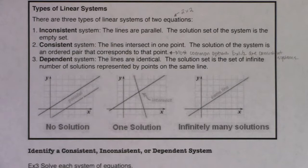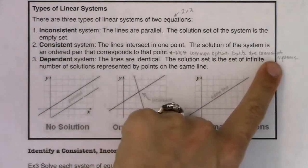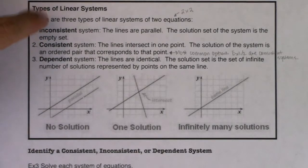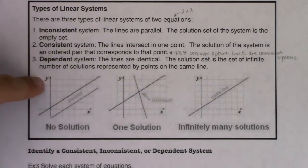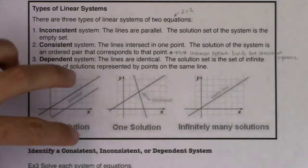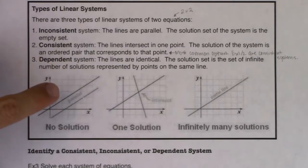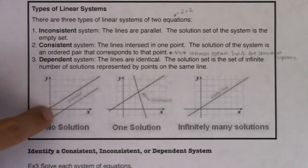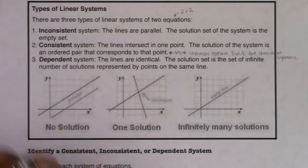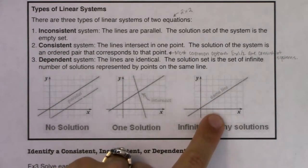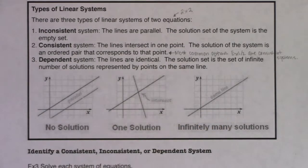In example one and two we saw consistent systems. So in example three, I'm going to give you a version of an inconsistent and a dependent system. I want you to see algebraically what happens, because this is graphically what's going on. One system in example three is inconsistent — parallel lines. One is dependent — the two lines would be the same line. I want you to see how the algebra matches those graphs.